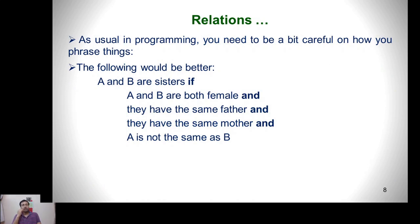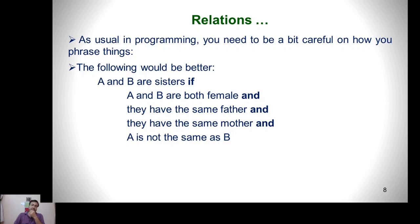As usual in programming, you need to be careful about how you phrase things when expressing implicit relationships between objects. For example, the sister relationship can be accurately formulated as: A and B are sisters if A and B are both female, they have the same father, they have the same mother, and A and B are not the same person. This is the complete and accurate formulation of the sister relationship.